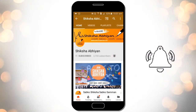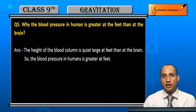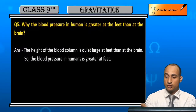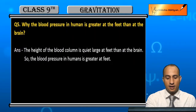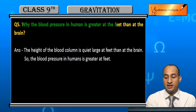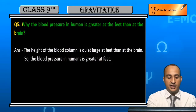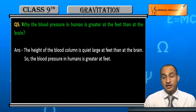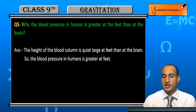Now students, see the fifth question. The question is: why is blood pressure in humans greater at the feet than at the brain?